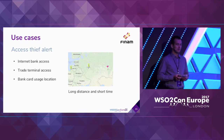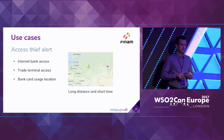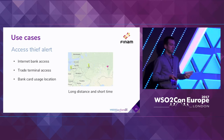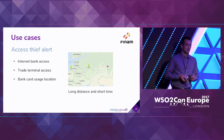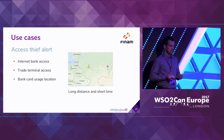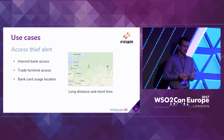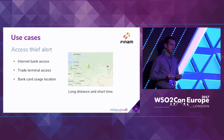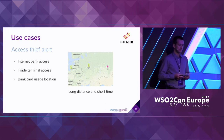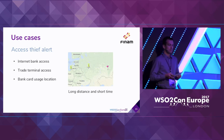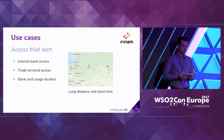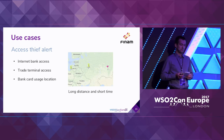The second use case is about access events. A client can generate several access events — for example, from internet bank access, from trade terminal access, or from bank card usage. Each event comes with an IP address. Using the IP, we can determine geolocation. If we find that the user had two or more access activities from different places with a long distance between them in a short time period, we will generate an alert signal. For example, a user cannot travel at a speed of more than 1,000 kilometers per hour.